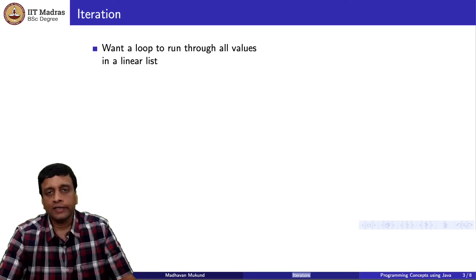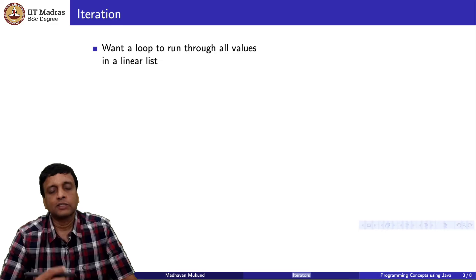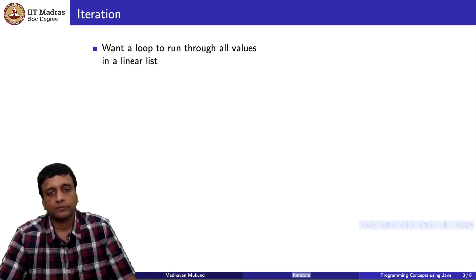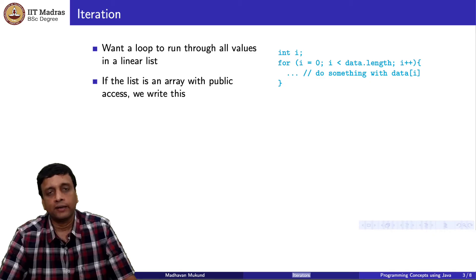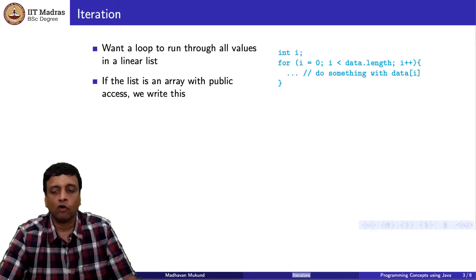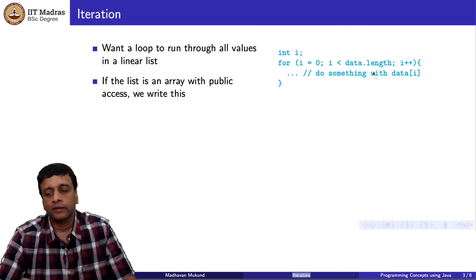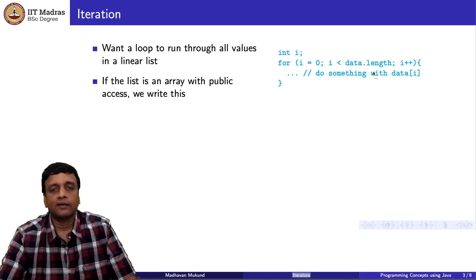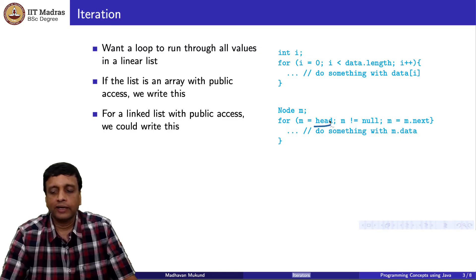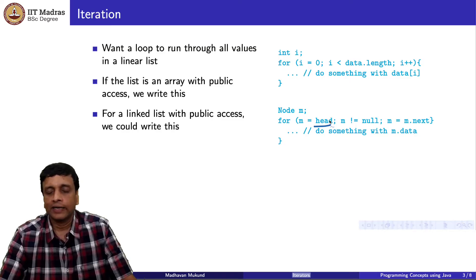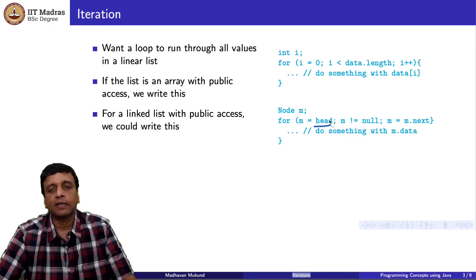As a user of a linear list, it is quite natural to want to run through the elements in the list — this is what we call iteration. We want a loop that starts from the first element and goes through all of them in sequence until the last one. If the data variable were public and the data is an array, we can write a normal for loop running from 0 to data.length. On the other hand, if we know it is a linked list and we have access to the head, we can start with the head and walk through all the elements.